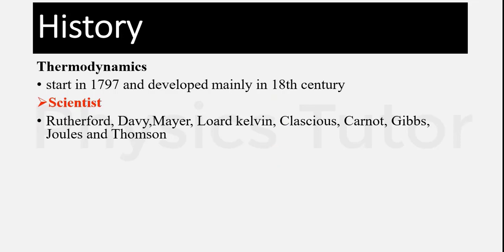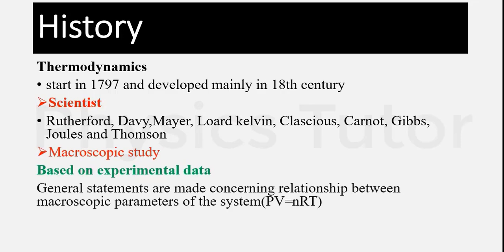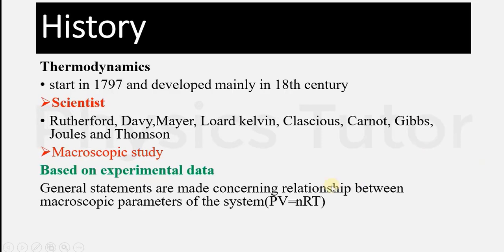Statistical mechanics tells us about microscopic properties, while thermodynamics tells us about macroscopic study. In thermodynamics, we take experimental data and use the equation PV = nRT to show the relation of pressure, volume, number of molecules, the general gas constant R, and temperature.